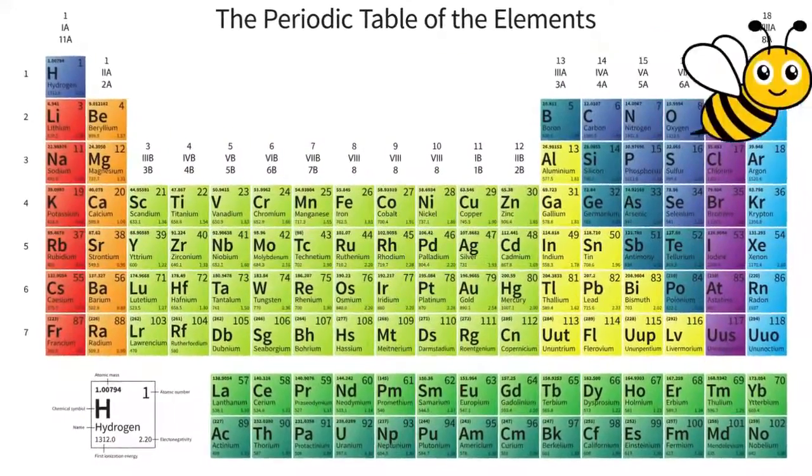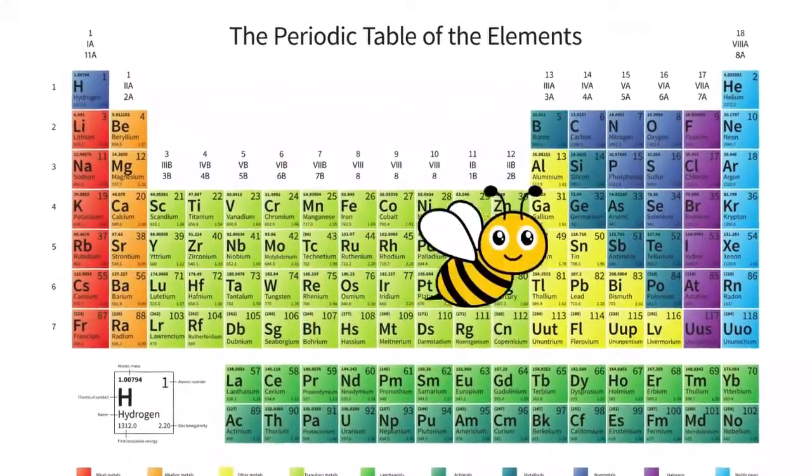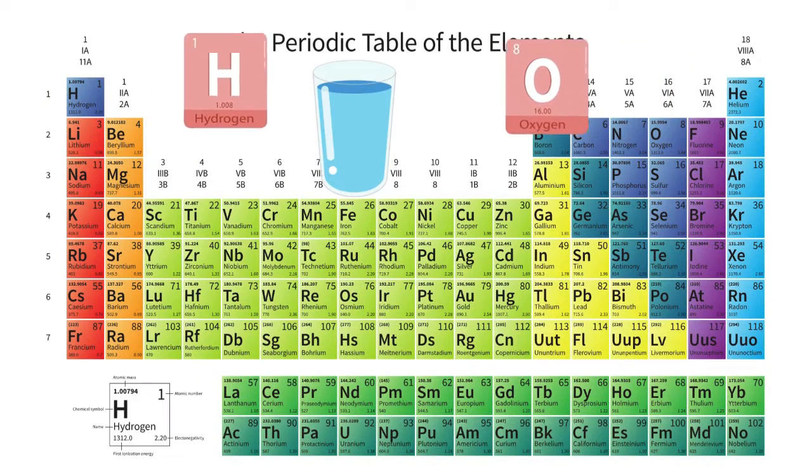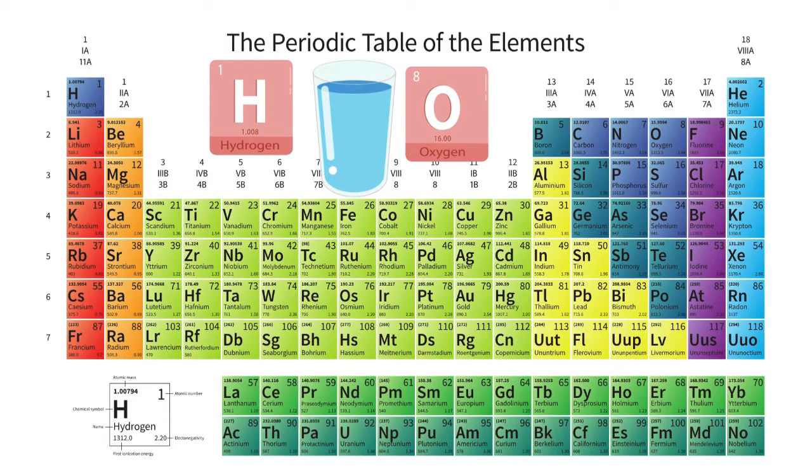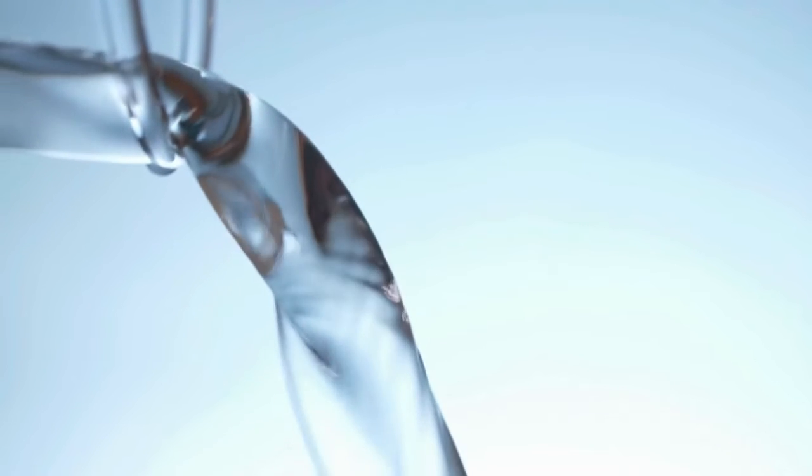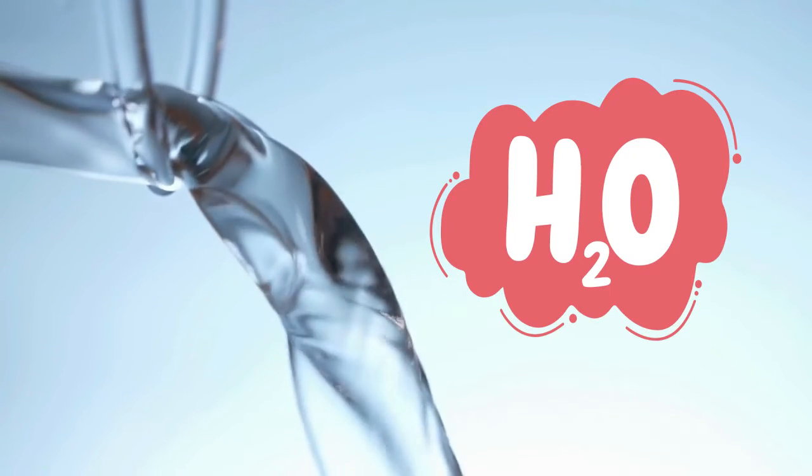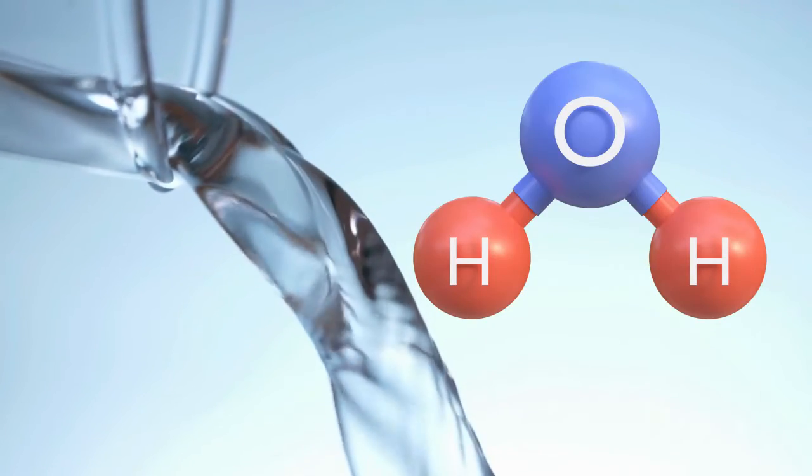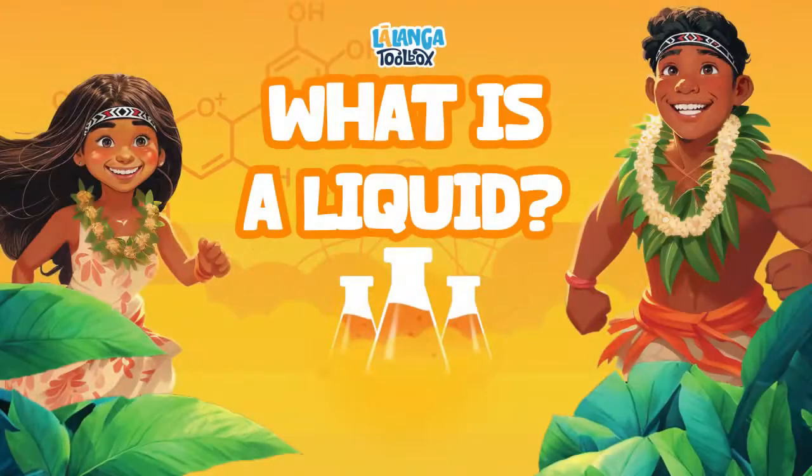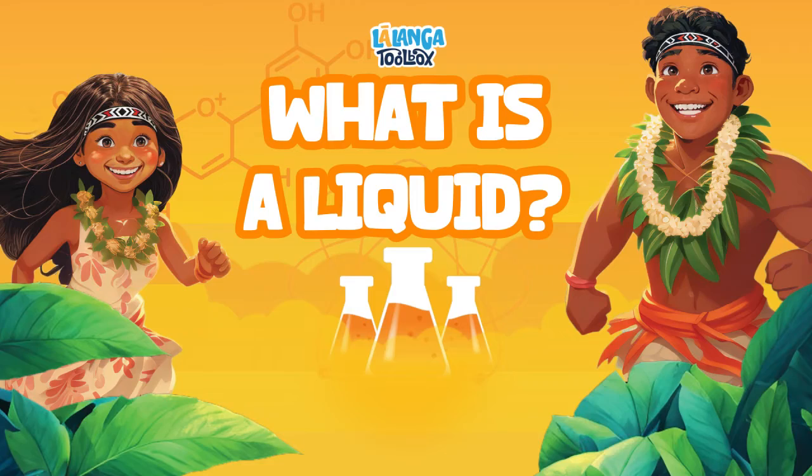Everything in the world is made up of elements found on the periodic table. A compound happens when you combine two or more elements together to form another chemical. So next time you're drinking water, remember that the symbol for water is H2O, and water is made out of two hydrogen atoms and one oxygen atom. Hope you've enjoyed learning with us. Kākite, see you next time.